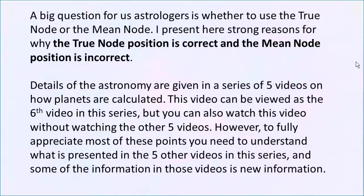As astrologers we run our astrology software and we have this choice of true node or mean node, and there's always the question: which one should I use? Is one of them correct and the other one wrong? Do both of them have some validity? There's also an argument by some people that we really can't trust either one. What I presented in that series of five videos is that the true node is correct. Period.